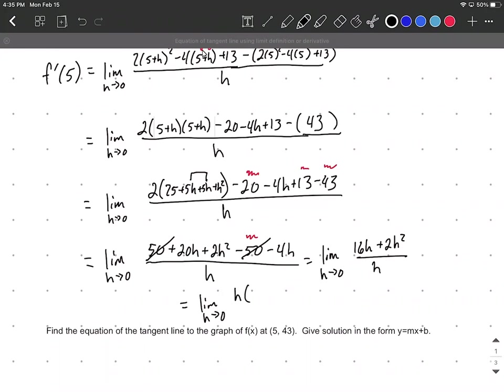Factoring leaves h(16 + 2h)/h. The h's cancel, leaving 16 + 2h. Now we can plug in 0 by substitution since h is no longer in the denominator. Plugging in 0 for h: 16 + 2(0), which equals 16.